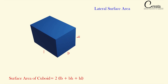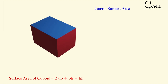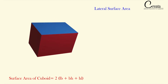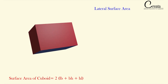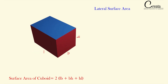Let's calculate the lateral surface area. This is a new term. Lateral surface area means the surface area of the object without the top and the bottom face. Lateral means only the lateral surface will be covered — we will not cover the surface area of the top and the bottom face. For this cuboid, the lateral surface area will be the surface area of only the lateral faces.